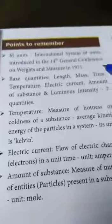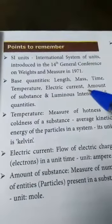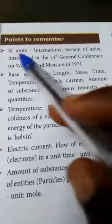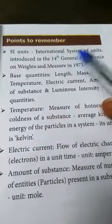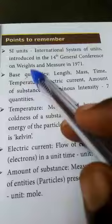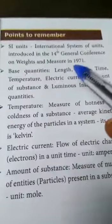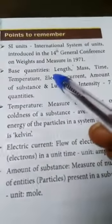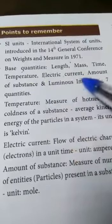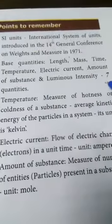Points to remember about this lesson. Recall the lesson. SI unit, international system of units, introduced in the 14th General Conference of Weights and Measure in 1971. Base quantities: length, mass, time, temperature, electric current, amount of substance, and luminous intensity. Totally seven quantities.